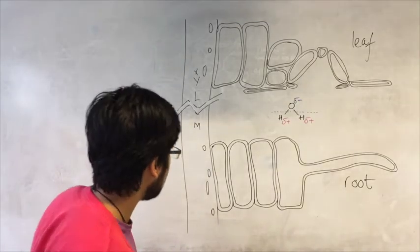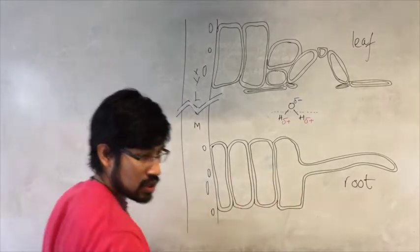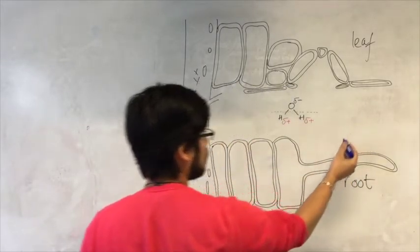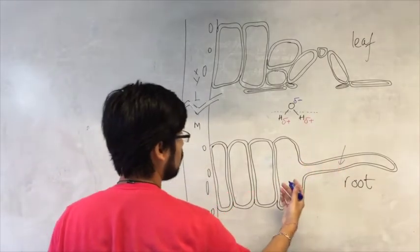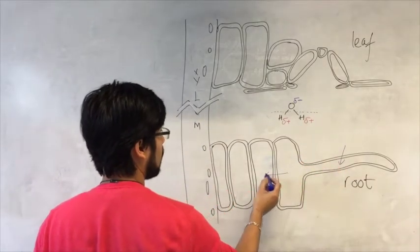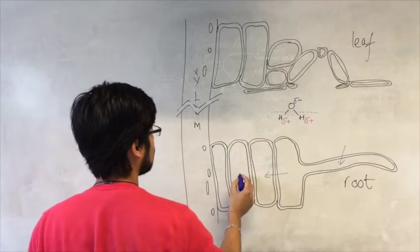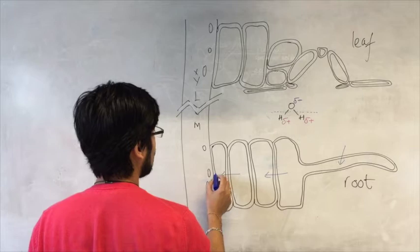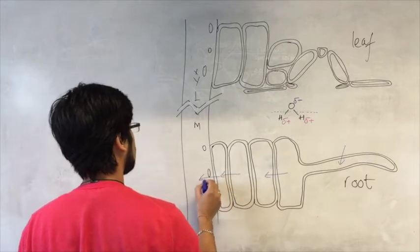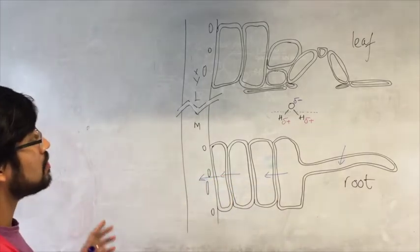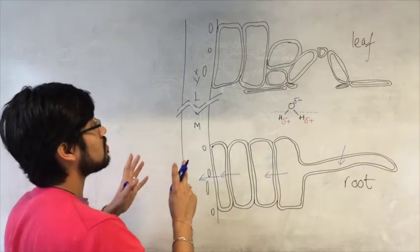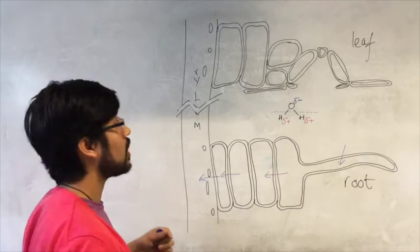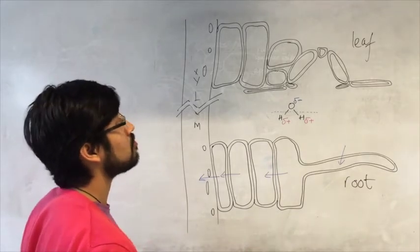Let's continue the story. We have water having moved from the soil into the root hair, from the root hair into the cortex, from the cortex into the endodermal cells, and from the endodermal cells into the xylem. But what happens next? Why does it move against gravity, upwards through the plant stem and to the leaves that require it?